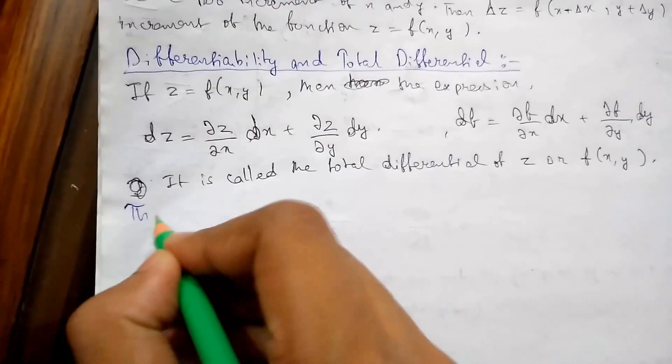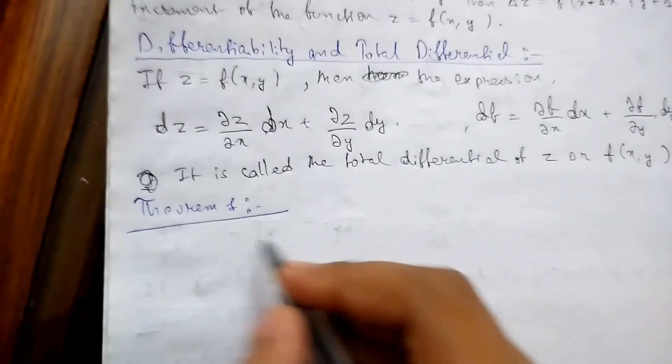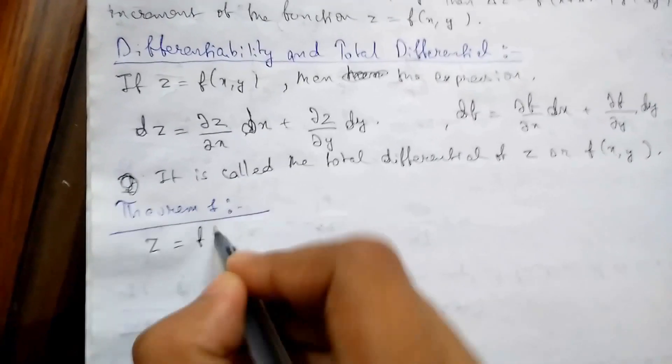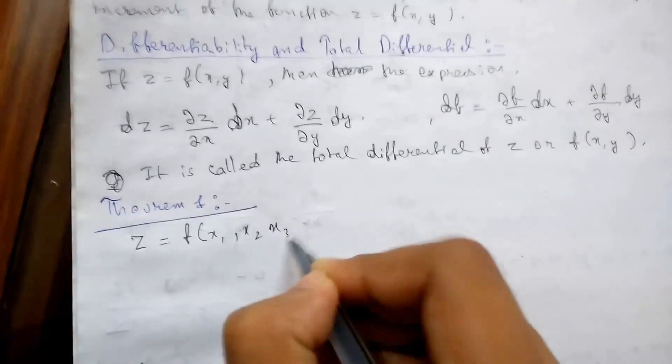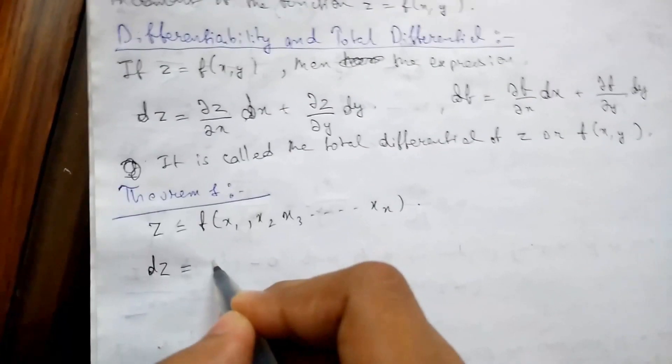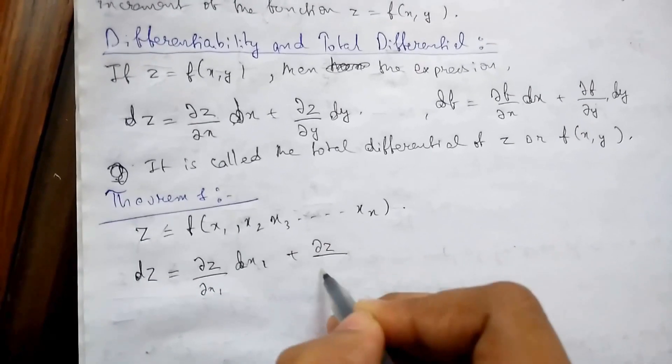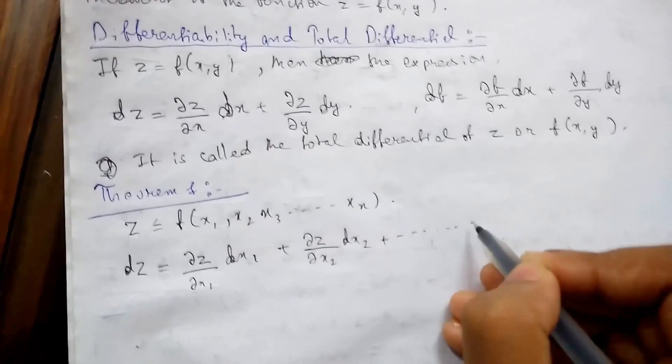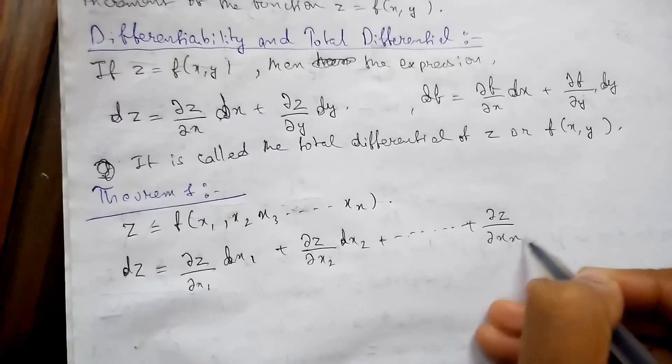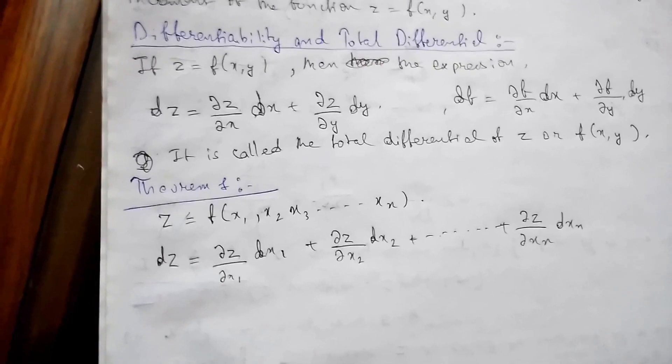So let us look at some theorems. First theorem is Theorem 1 which says if z equals f of x1, x2, x3 up to xn, then we can write dz as dz equals del z upon del x1 dx1 plus del z upon del x2 dx2 and so on up to del z upon del xn times dxn. So this was the total differential.